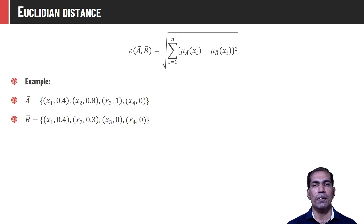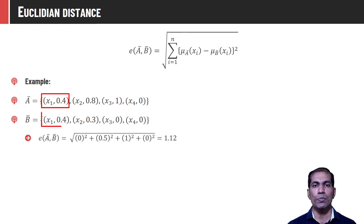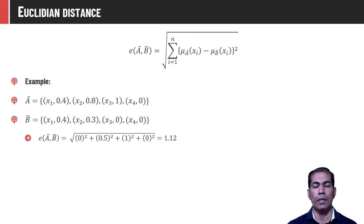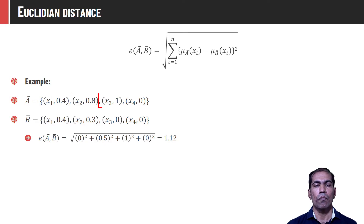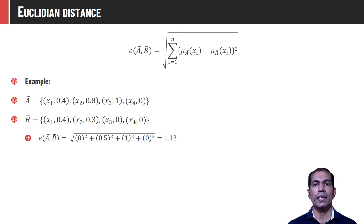For given sets A-bar and B-bar, the Euclidean distance is computed as: √[(0.4−0.4)² + (0.8−0.3)² + (1−0)² + (0−0)²] = √[0 + 0.25 + 1 + 0]. So the Euclidean distance between the two given fuzzy sets is 1.12.